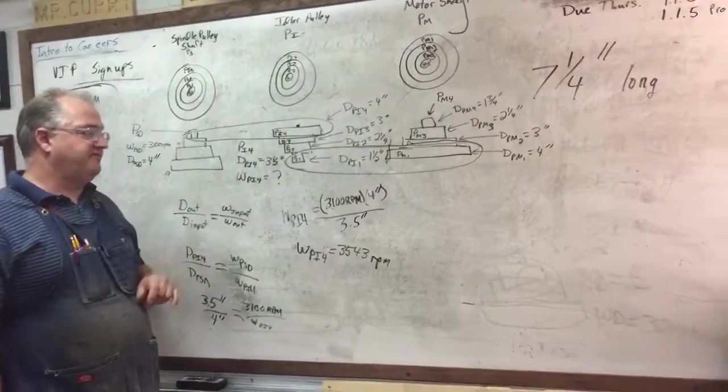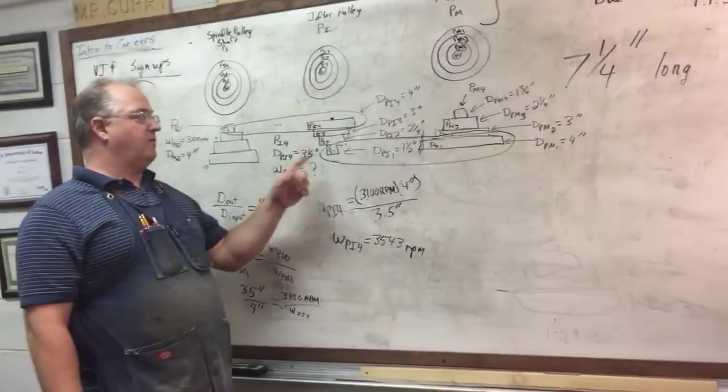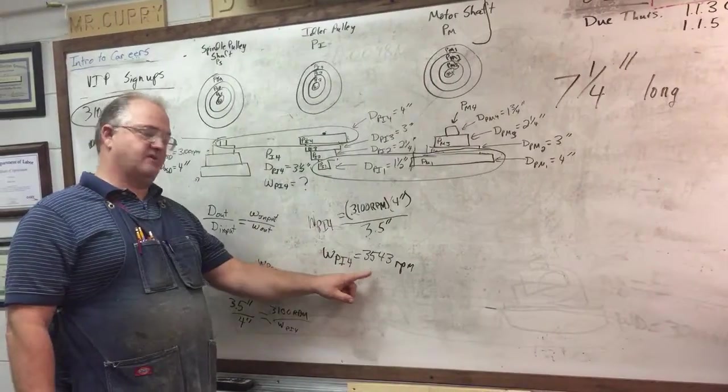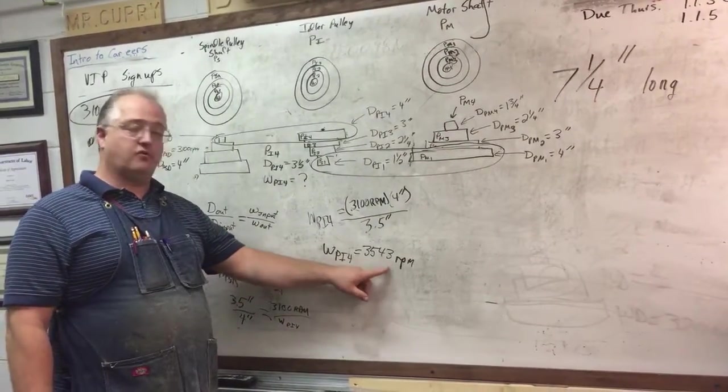All right, so yesterday we finished up figuring out what the RPM of our idler pulley was, and we determined that was 3,543 RPM.